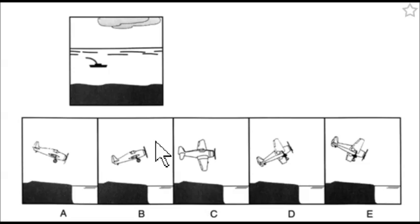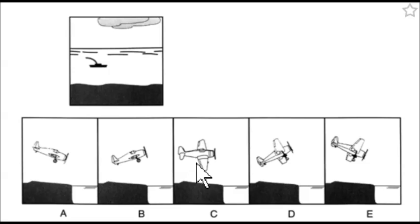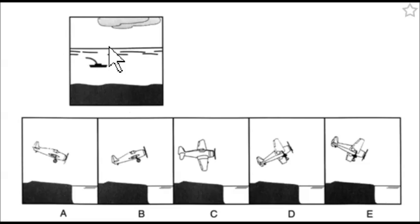Let's do another one. We have a lot of land showing. The horizon is above the midpoint of the square, and the horizon is also parallel to the dashboard — that indicates level flight. So it could be this guy or this guy, but not the ones in a bank. I would go with the descent because I see a lot of land and the horizon is slightly above the midpoint of the square. Answer: A.